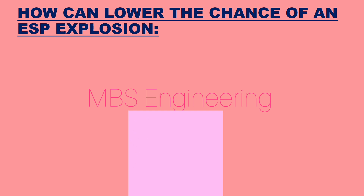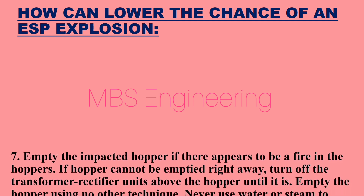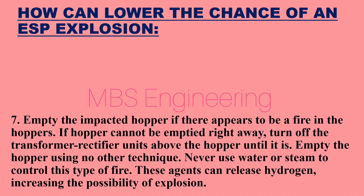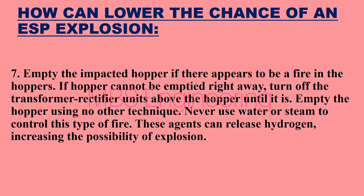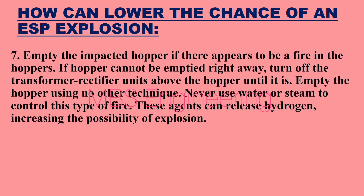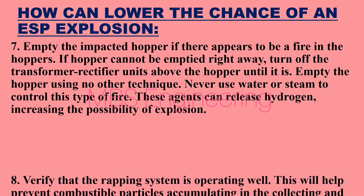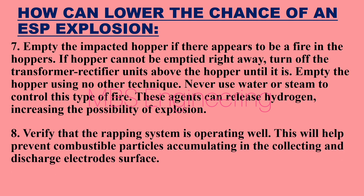Point 7: Empty the impacted hopper if there appears to be a fire in the hoppers. If the hopper cannot be emptied right away, turn off the transformer rectifier units above the hopper until it is empty. Never use any other technique — and never use water or steam to control this type of fire, as these agents can release hydrogen, increasing the possibility of explosion.